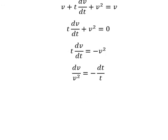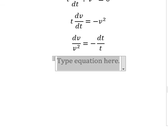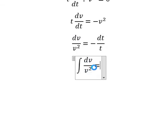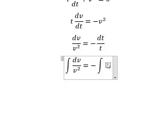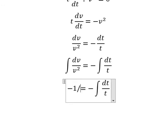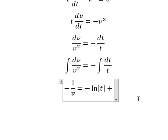Next, we integrate both sides. The integration of dv/v² gives us -1/v. The integration of -dt/t gives us -ln of the absolute value of t, and I'll add the constant C. So we have -1/v = -ln|t| + C.